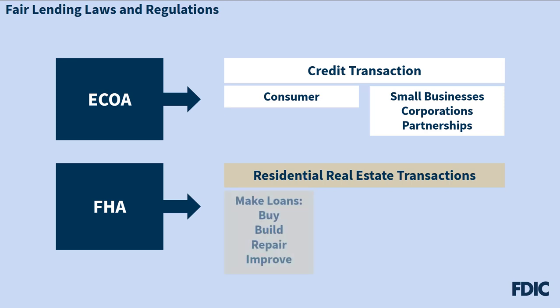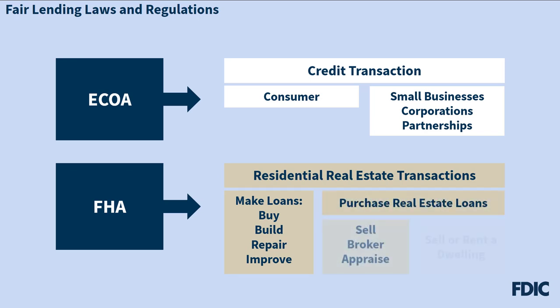The FHA covers making loans to buy, build, repair, or improve a dwelling. It also includes purchasing residential real estate, selling, brokering, or appraising residential real estate, and selling or renting a dwelling. In general, FDIC compliance examiners will focus on FHA's purview as it relates to credit transactions.